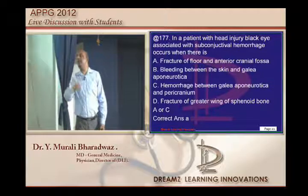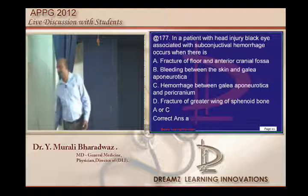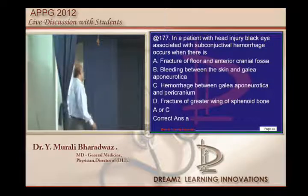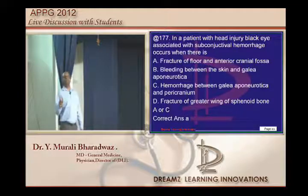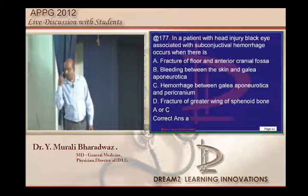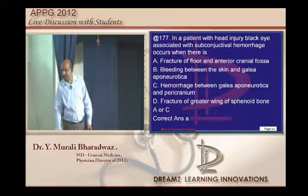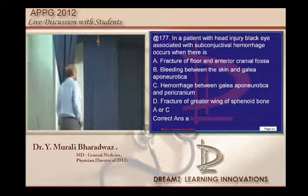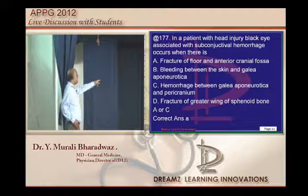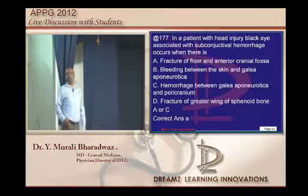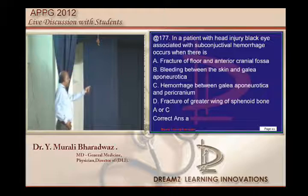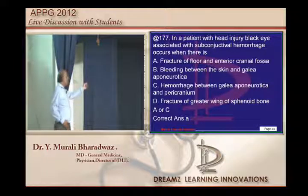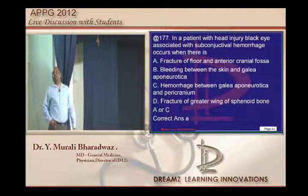How you differentiate these two types of black eye is the important question. If it is the anterior cranial fossa leading to the black eye rather than a local orbital injury, then the extravasated blood is limited sharply by the palpebral fascia of the orbital margin, and the discoloration is more purplish right from the commencement.